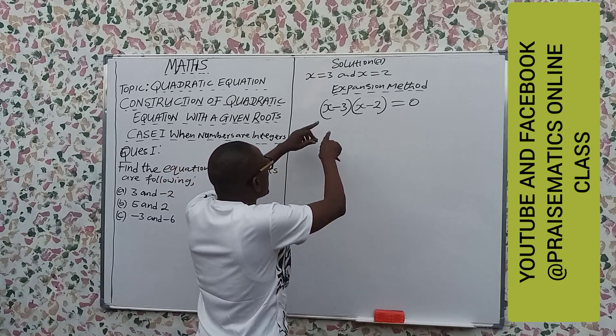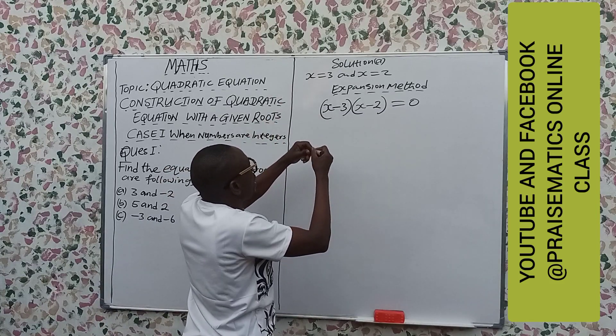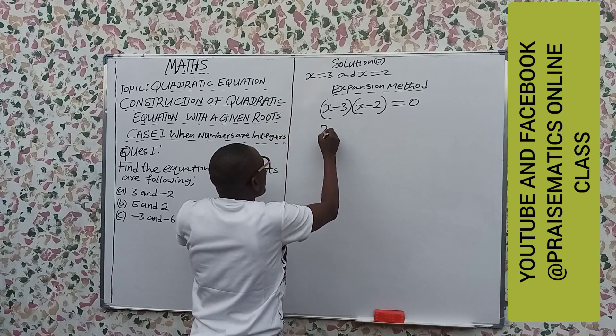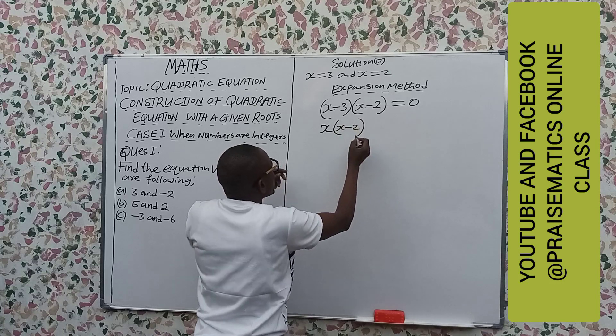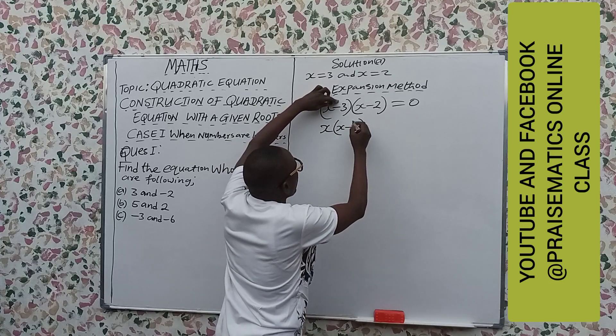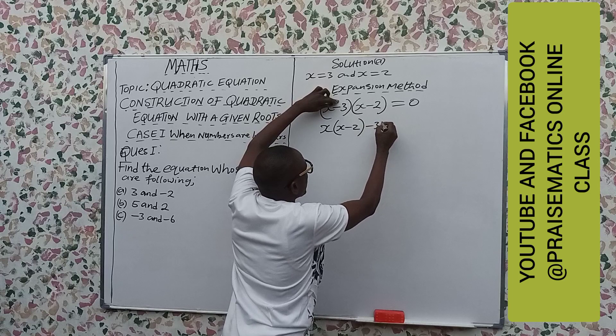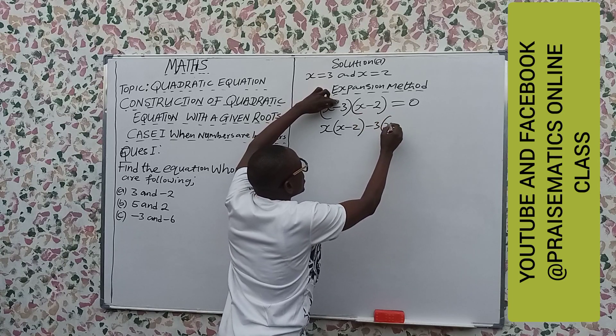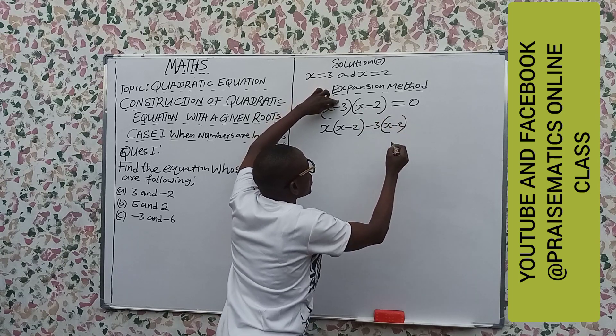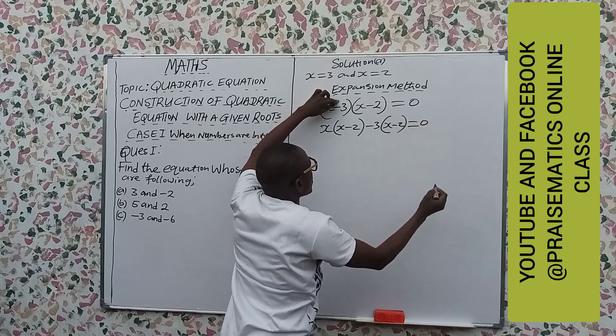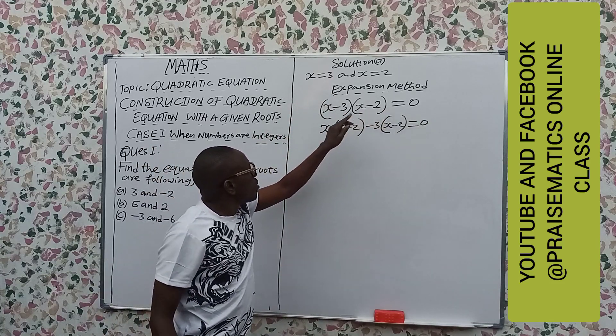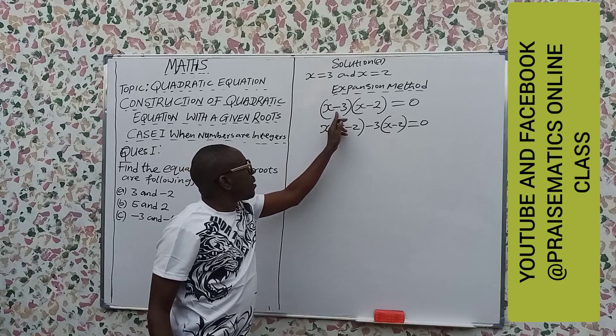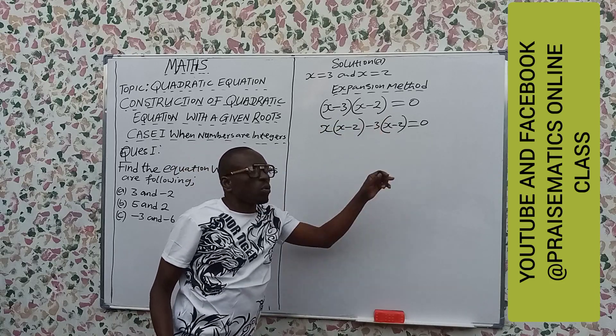Now what do we do? We need to split them one after another. This x will go x into x minus 2, close it. And we have minus 3 into x minus 2, close it. All equal to 0. x into this, and minus 3 into this. That is what we have done here.